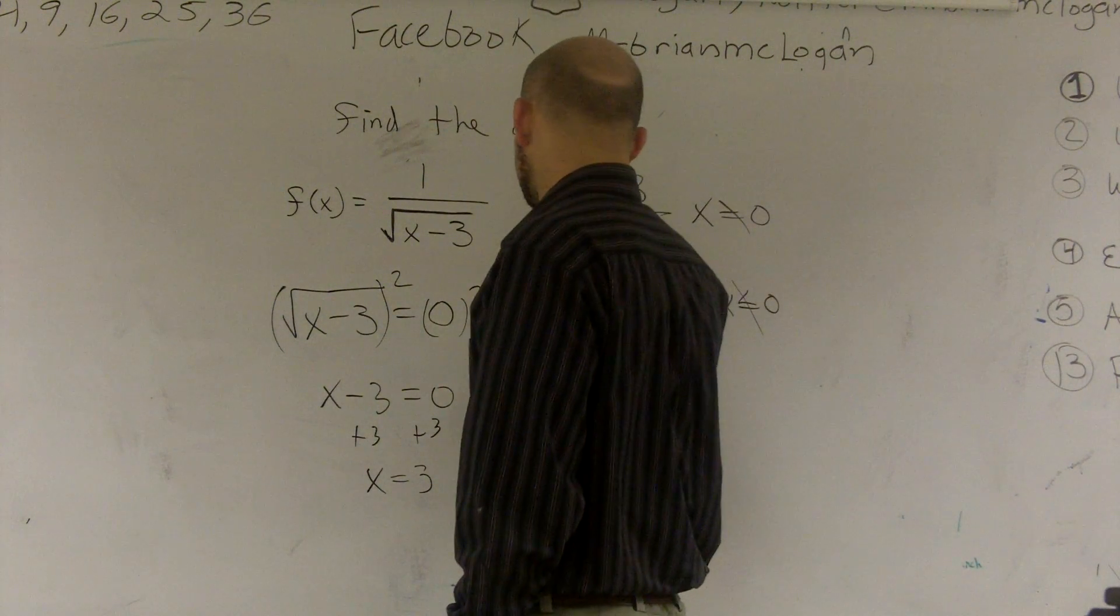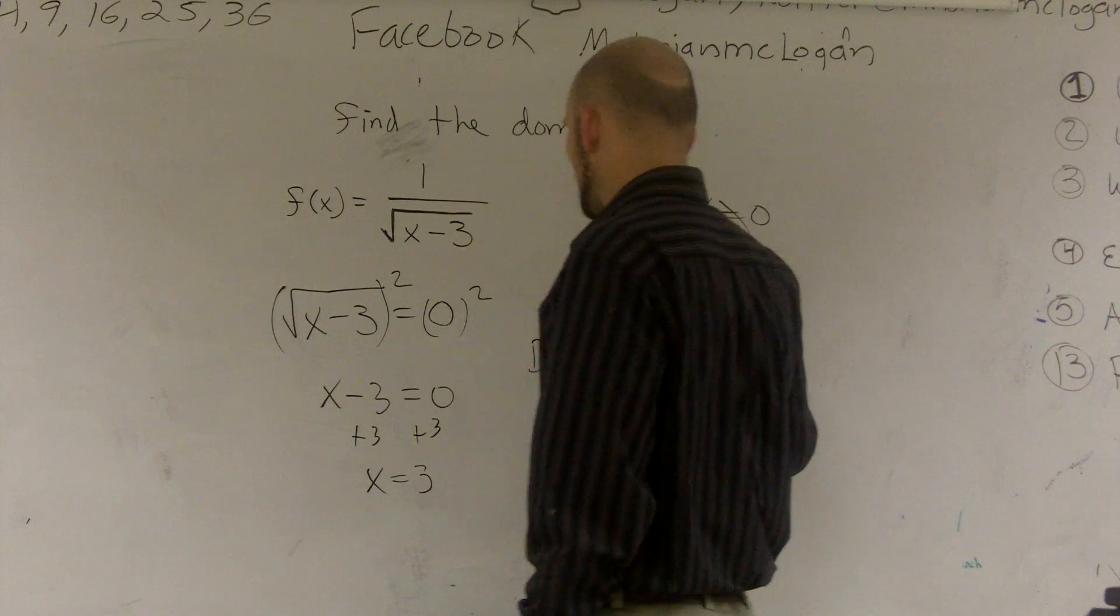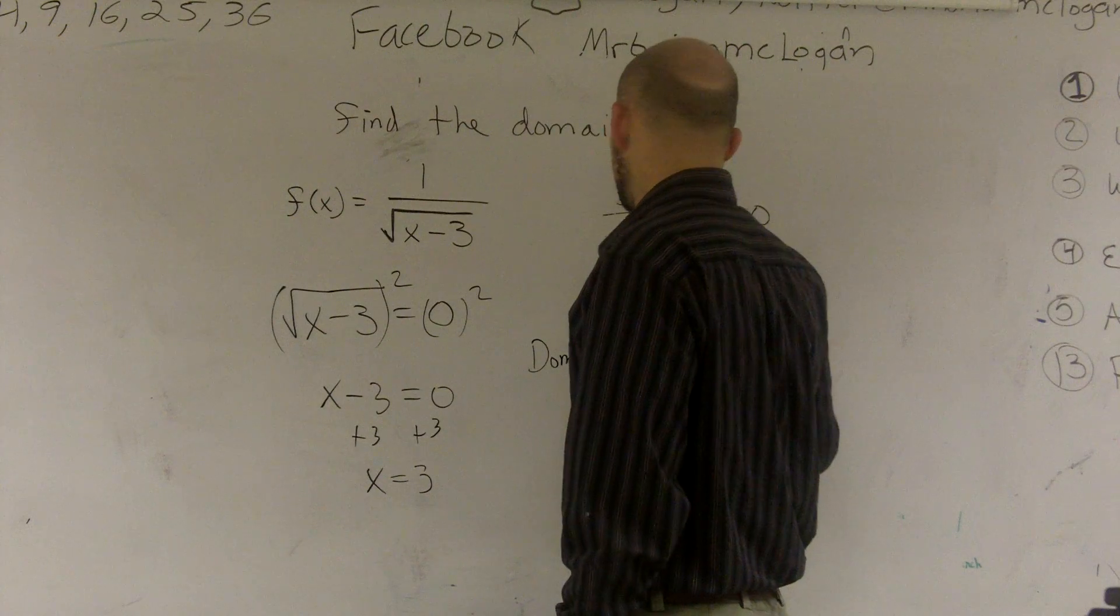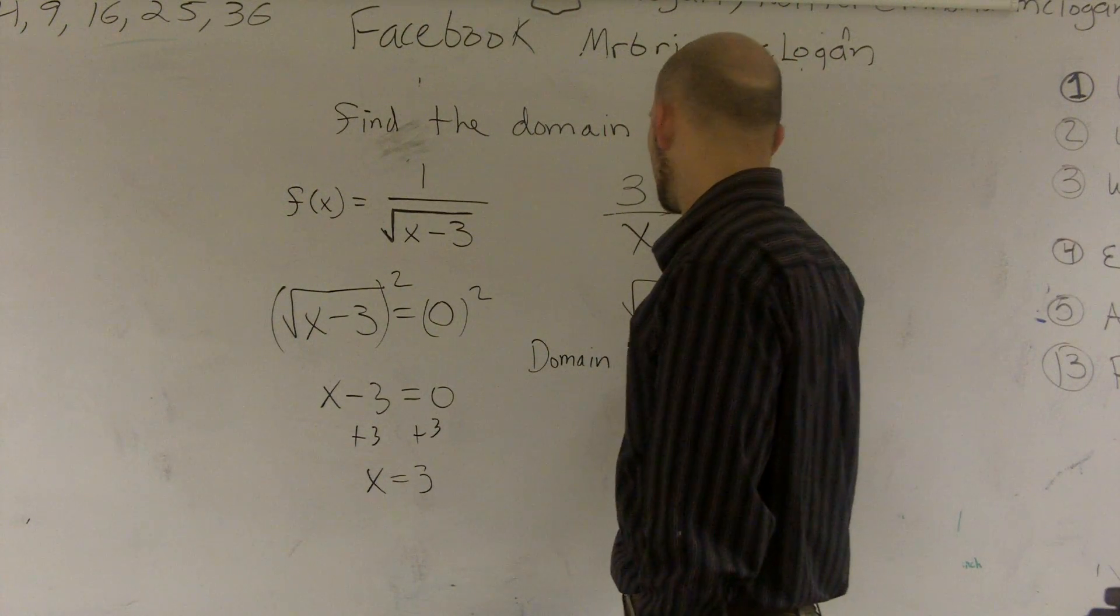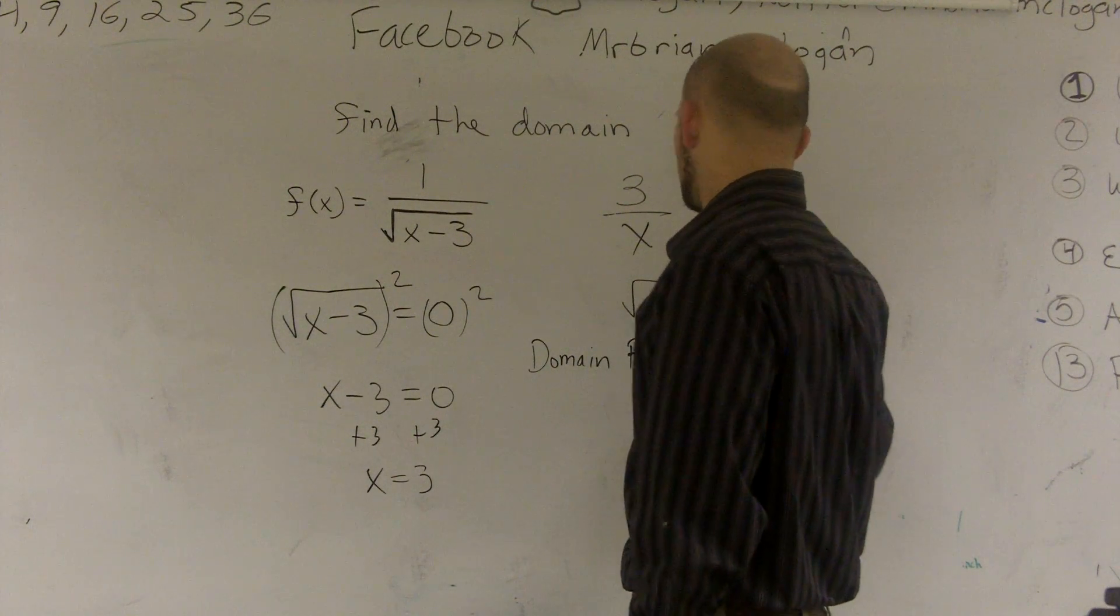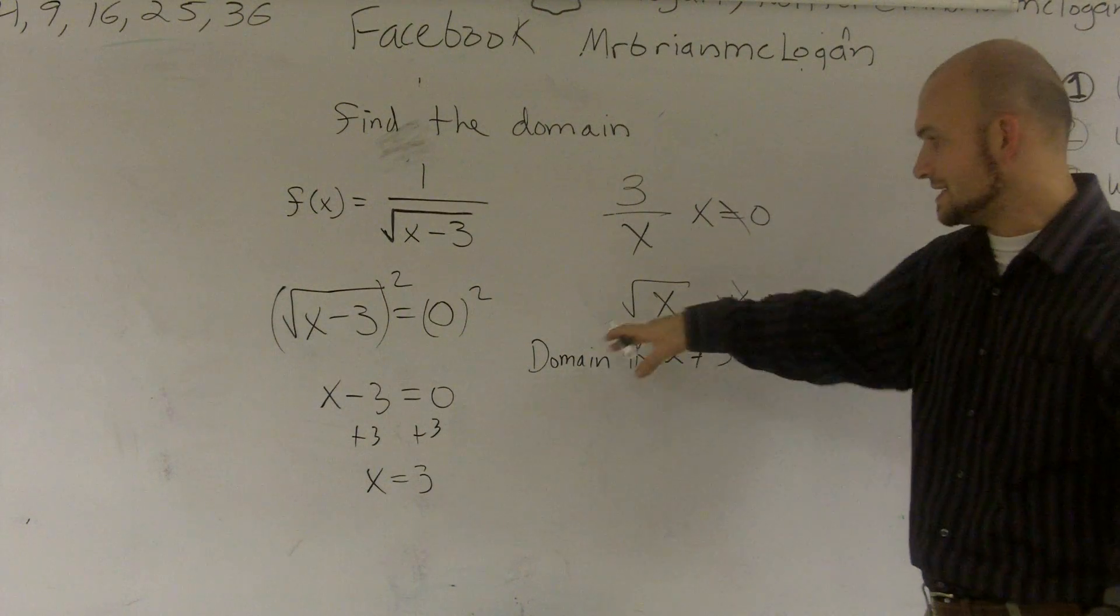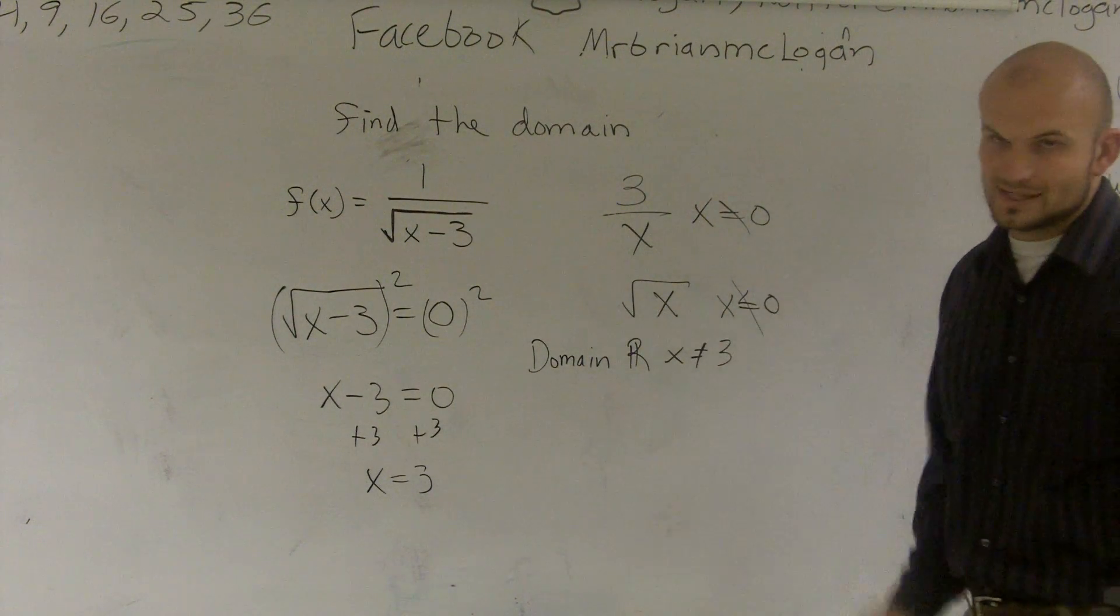So my domain is going to be all numbers except x cannot be equal to 3. Now, we're not done yet. So far, what I've learned is it's all numbers except x cannot equal 3.